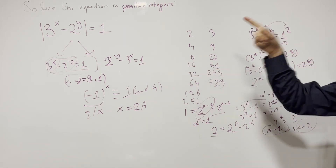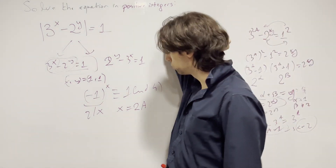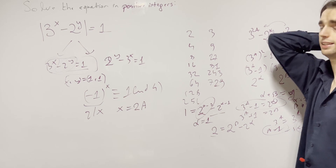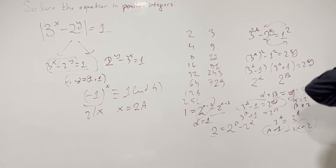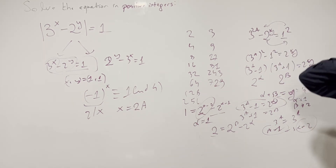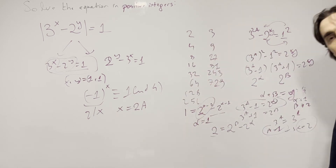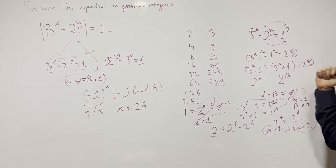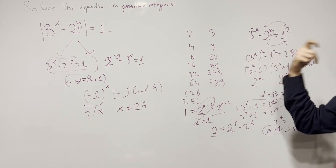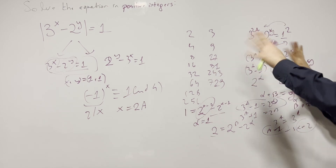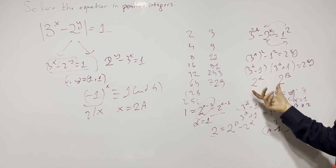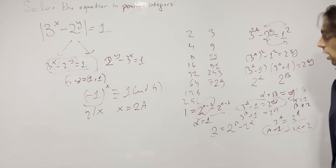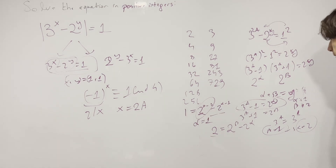We've said: assume y is greater than or equal to 2. For y equals 1, we have this solution. For y greater than or equal to 2, look at modulo 4 — it tells us x is even. So x equals 2 times a. Then we write it as a difference of squares, and casework finishes it. It tells us alpha equals 1, then we get what a is, and then we get what beta is.